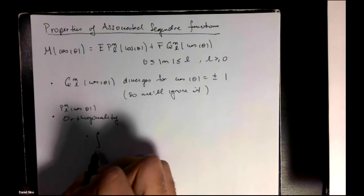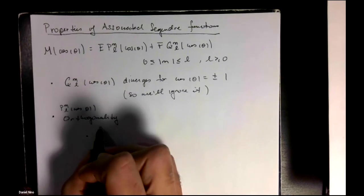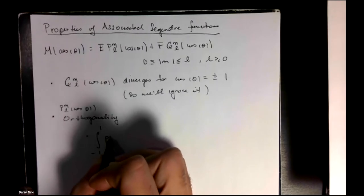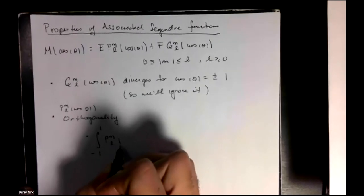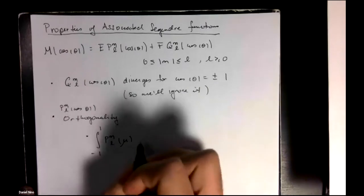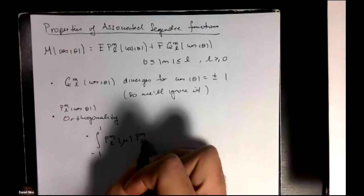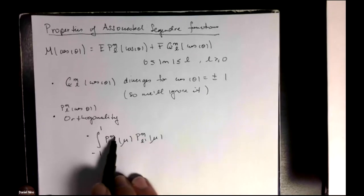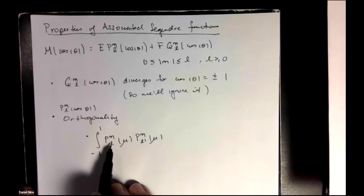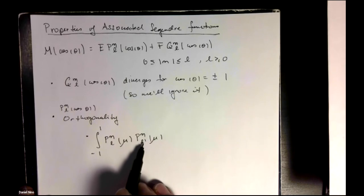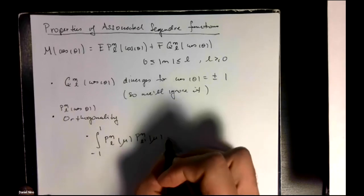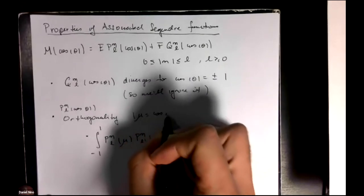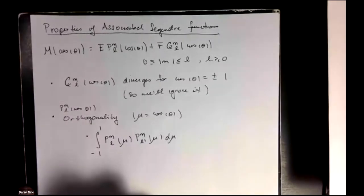So the first one says, if you integrate from minus one to one, P_m^l(u) times P_m^l'(u), so here the m's are the same, l and l prime can be different, and you integrate this with respect to mu. And remember, we had defined mu as being cosine theta.